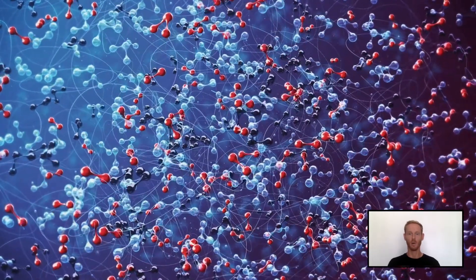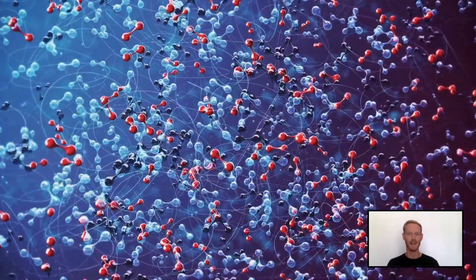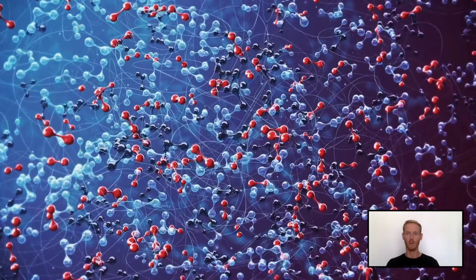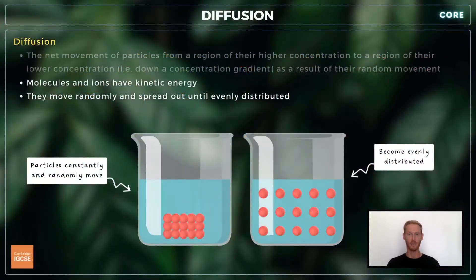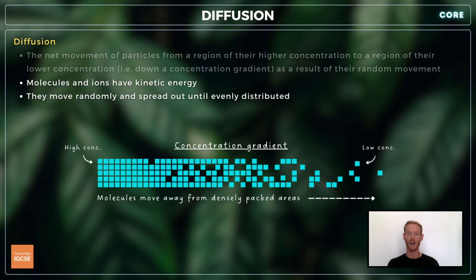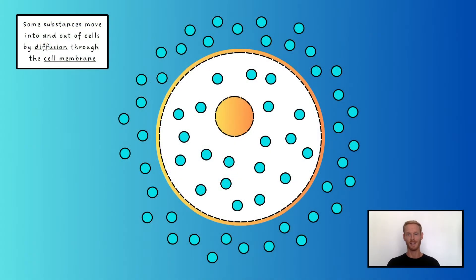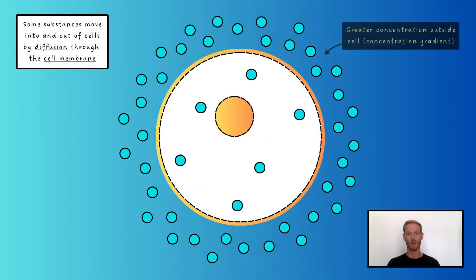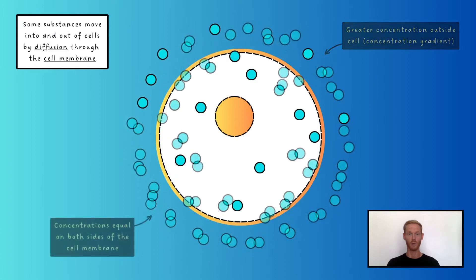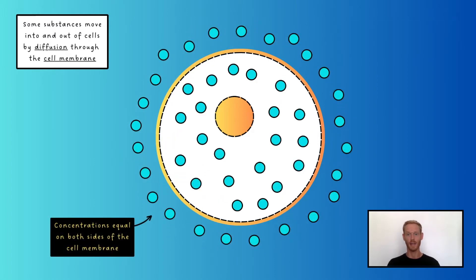The molecules of a gas, a liquid, or a substance dissolved in a liquid all have kinetic energy, so they're constantly in motion. As a result, molecules spread out over time until they're evenly distributed. When molecules diffuse, they always move from areas of high concentration to areas of lower concentration. When the concentration of a substance is higher in one area than another, we refer to there being a concentration gradient. For example, when a cell respires, it uses oxygen, meaning the concentration of oxygen molecules in the cell decreases. This creates a concentration gradient that results in the diffusion of oxygen across the cell membrane and into the cell.